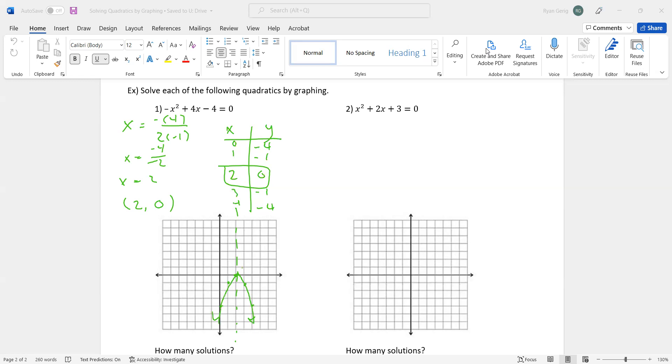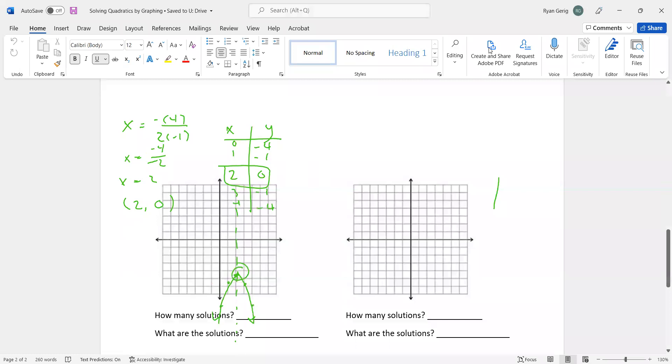How many solutions does this one have? It's only got one, right? Let's scroll down here a little bit. It's only got one solution, right? Because it only crosses one time. What are the solutions? It would be x = 2.